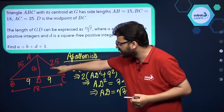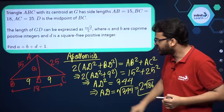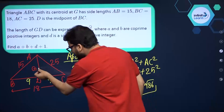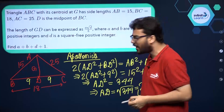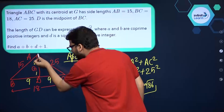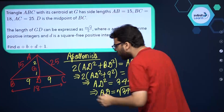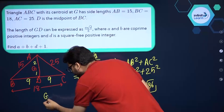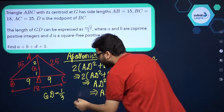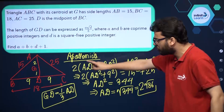Now we want to find GD. G is the centroid of this triangle. The centroid divides a median in the ratio 2 is to 1. So AG to GD is 2:1 — this is a ratio, not actual lengths. From this, GD equals one-third of AD.